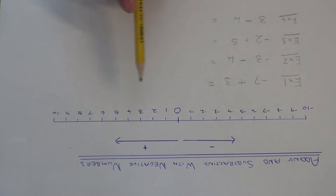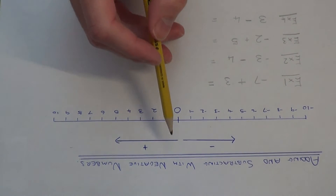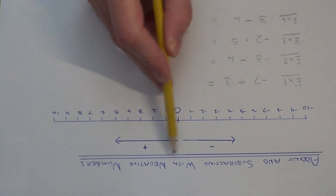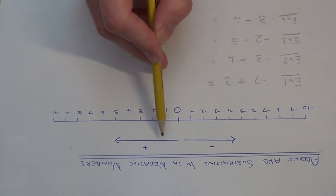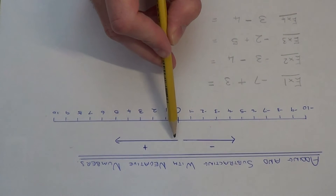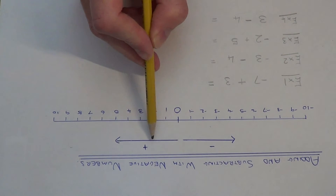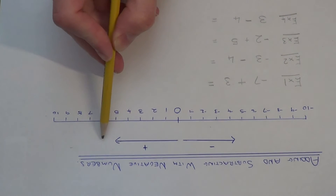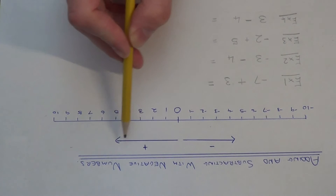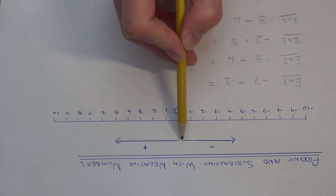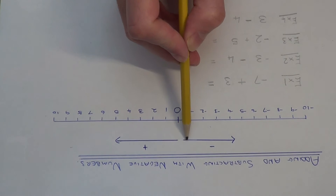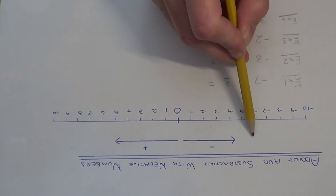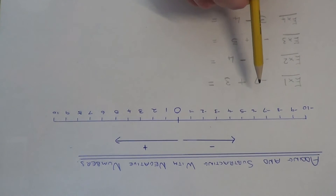There are two rules which you need to remember and these are written above here. If we are adding on, you need to move to the right on the number line. If you are subtracting, you need to move to the left on the number line.